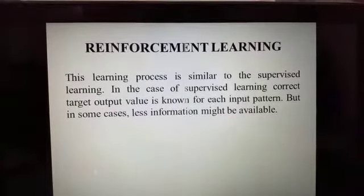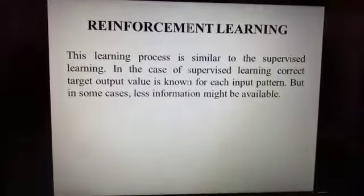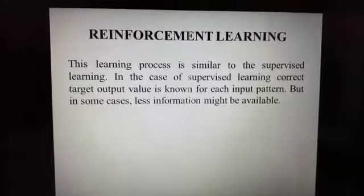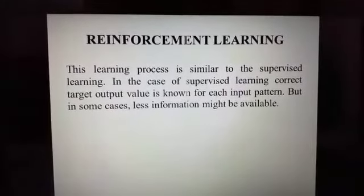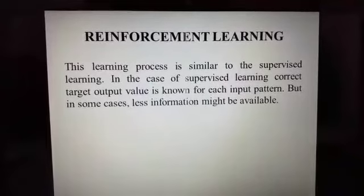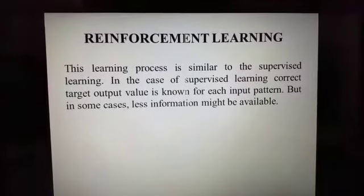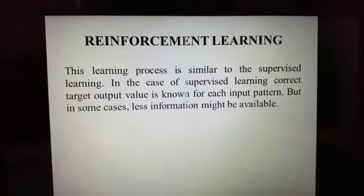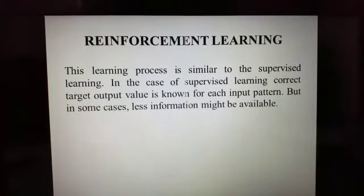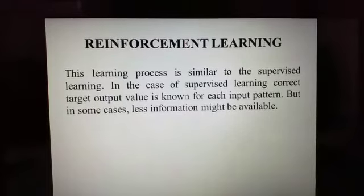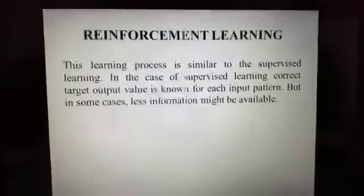But in some cases, less information might be available. For example, the network is told only 50 percent information of actual output is correct. Thus, here only critic information is available, not the exact information. Learning based on this critic information is called reinforcement learning, and the feedback sent is called a reinforcement signal.